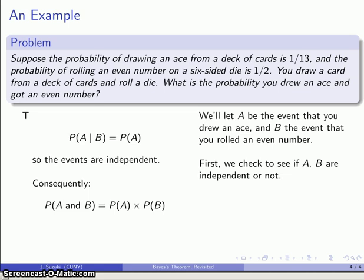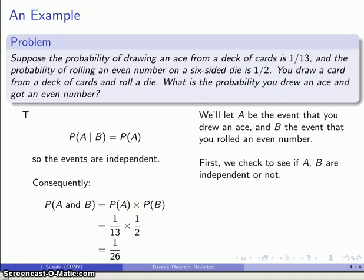And so independence allows me to use the formula for the probability of independent events. The probability that both occurs is just the product of the two probabilities. And I know the one probability is 1 13th, and the other probability is 1 half, so my probability is going to be the product 1 26th.